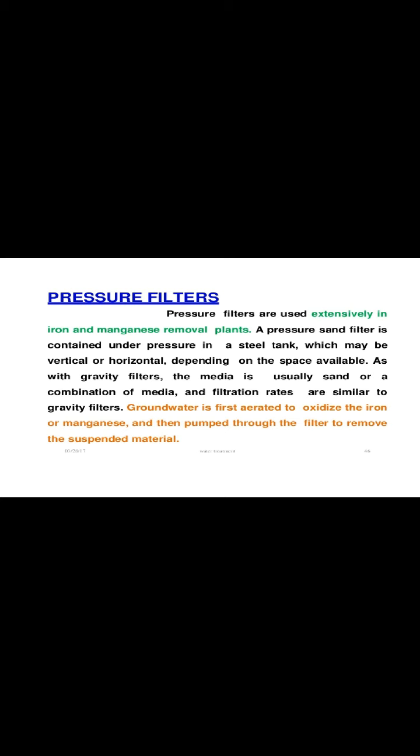Pressure filters are another type of rapid filter. Pressure filters are used especially in iron and manganese removal plants. The pressure sand filter is contained under pressure in a steel tank, which may be vertical or horizontal depending on space available. The filtration media is usually sand or a combination of media, and filtration rates are similar to gravity filters. Groundwater is first aerated to oxidize the iron and manganese, then passed through the filter to remove suspended materials.